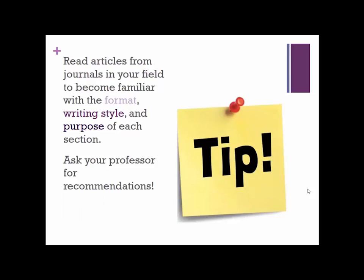One suggestion for learning more about the structure of scientific articles you want to emulate is to actually read through the articles you're using as sources and look at them to become familiar with the structure, format, and the way people are writing about the issues you hope to write about — and how they're organizing each section. This is really the best way to learn how to write a scientific article: read many samples and decide what you think is most effective. Ask your professor for recommendations of journals that he or she respects.